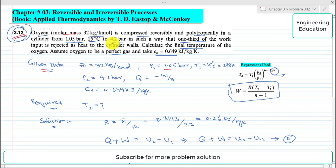Temperature T1 is 15 degree centigrade and it is 288 Kelvin. Also pressure P2 is 4.2 bar and the heat rejected is one third of the work input, so Q is equal to minus W by 3. Minus sign shows rejection.